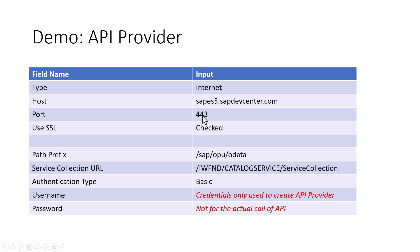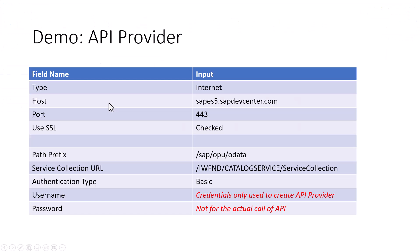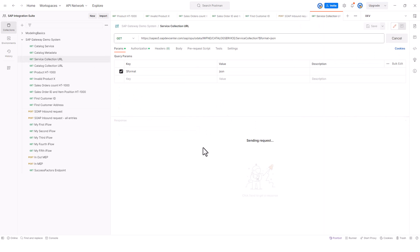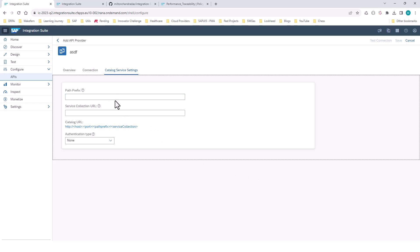Port is SSL since we are using SSL. Then once we provide those things, we can go into the catalog service settings. Most SAP systems have an OData service that gives the list of OData services available. You may have encountered the transaction IWFND and the main service, where it lists all the OData services in that system. This is delivered as an OData service itself, so you can give this service collection URL, which is a collection of all the OData services.